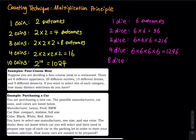What if you have eight dice? That will be six times itself eight times, so six raised to the eighth power — that equals 1,679,616. That is the total number of outcomes in the sample space if you roll eight dice.